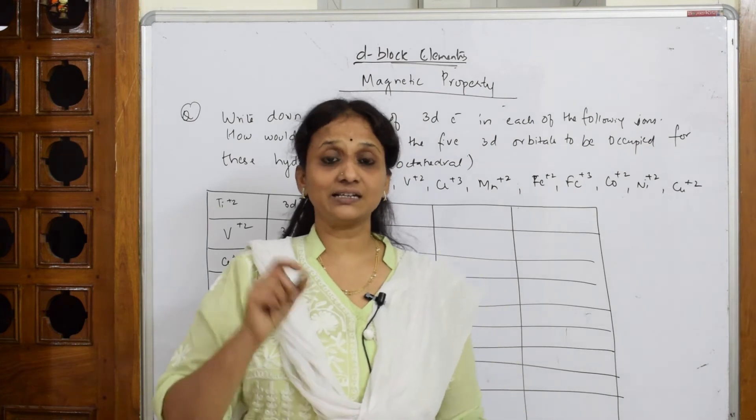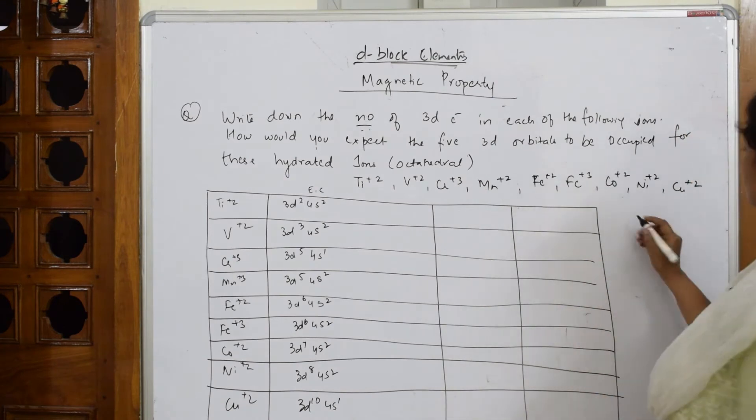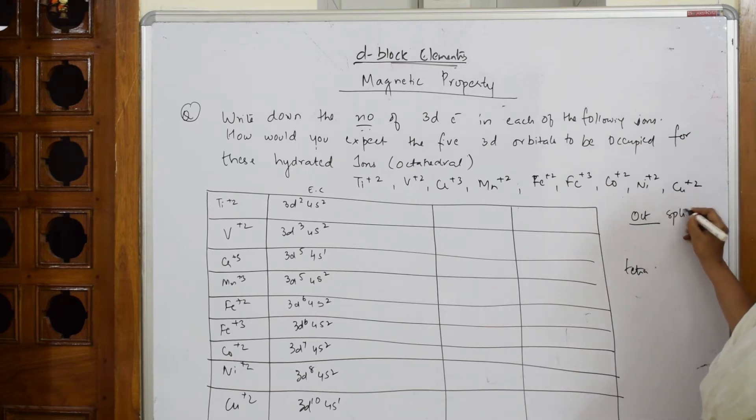Now, they're asking us, they're relating this concept to the octahedral splitting there. What is that? In octahedral if I have to say and in tetrahedral just observe if I have to take the octahedral splitting of d orbital.